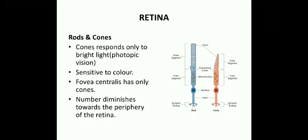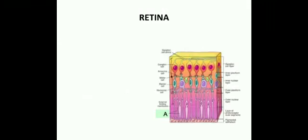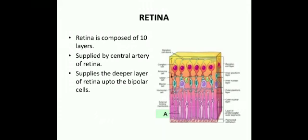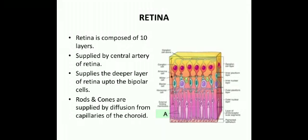The retina is composed of 10 layers and is supplied by the central artery of the retina. This artery supplies the deeper layers of the retina up to the bipolar cells, but the rods and cones are supplied by diffusion from the capillaries of the choroid.